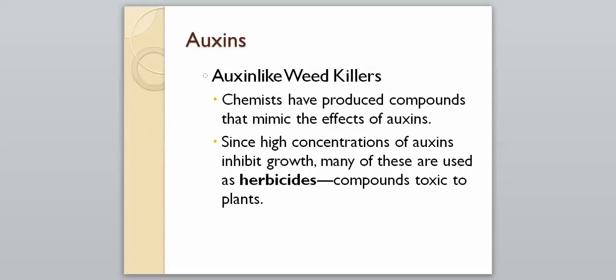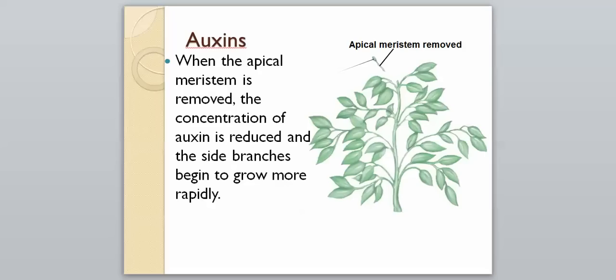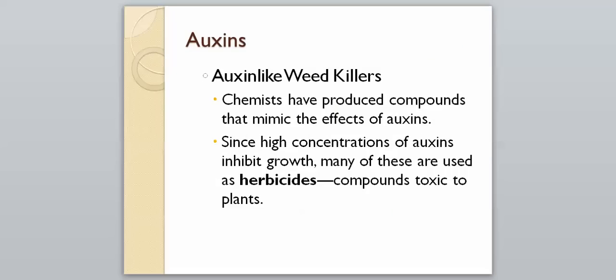Now let's look at how auxins have been used in other contexts. Chemists have produced compounds that mimic the effects of auxins. Since high concentrations of auxins inhibit growth, many of these are used as herbicides — compounds that are toxic to plants. We know how auxins act, we mimic that, and we use them to kill off plants that we do not want.